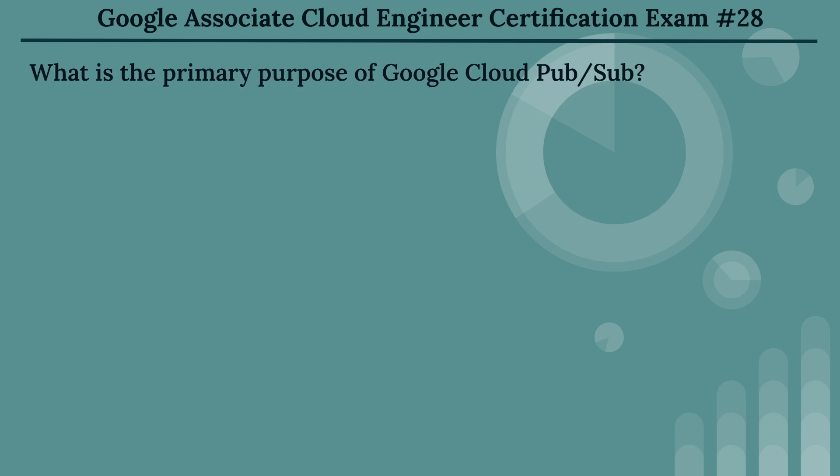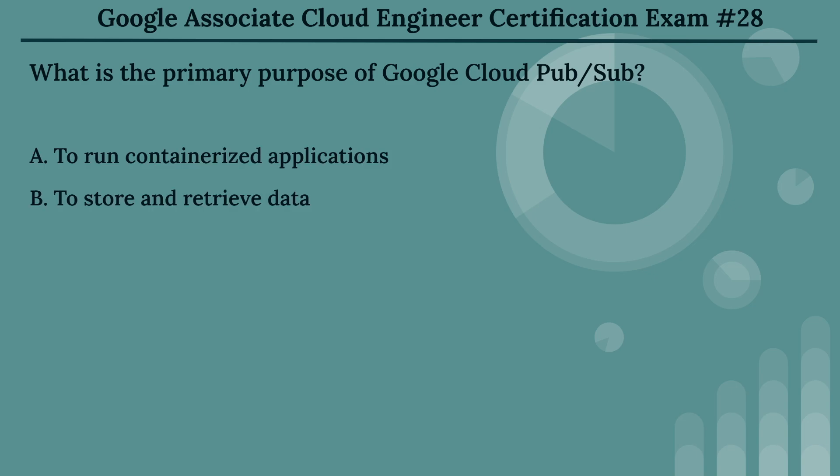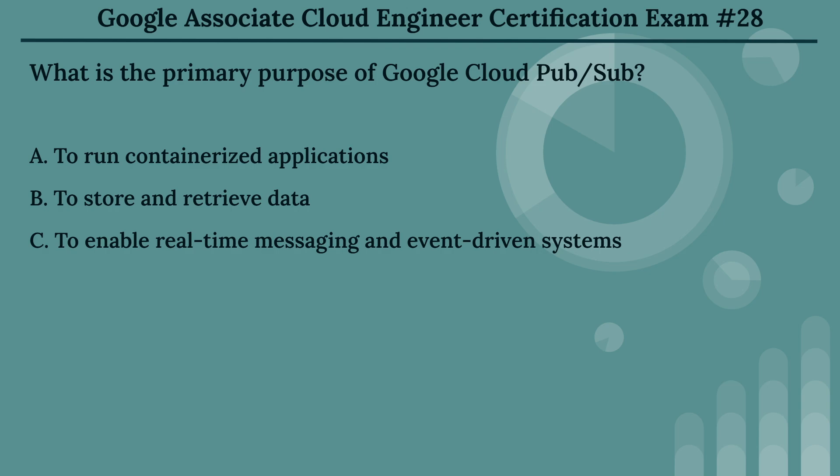The twenty-eighth question: what is the primary purpose of Google Cloud Pub/Sub? The options are: Option A, to run containerized applications. Option B, to store and retrieve data. Option C, to enable real-time messaging and event-driven systems. Option D, to manage virtual machines.